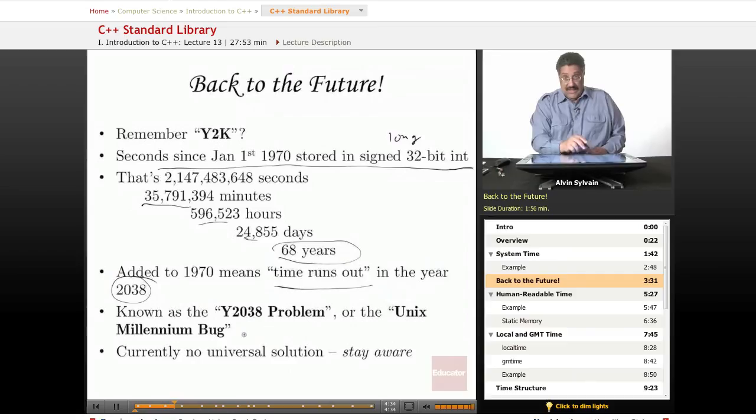This is known as the Y2038 problem or the Unix Millennium bug. Now, there's a number of solutions being knocked about because right now there's no real urgency to worry about that. The only programs that will start crashing are programs that are dealing in decades into the future. But at some point, they're going to have to come up with a solution.